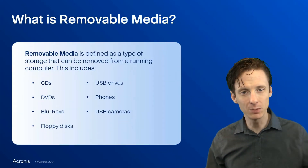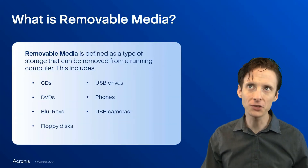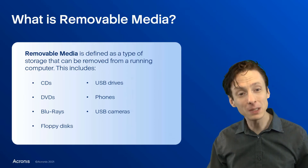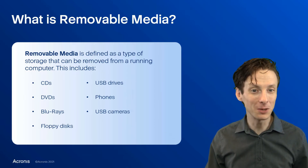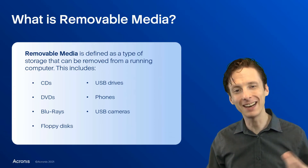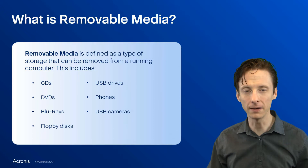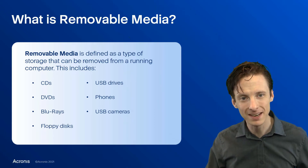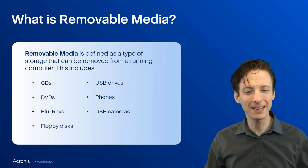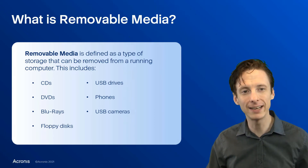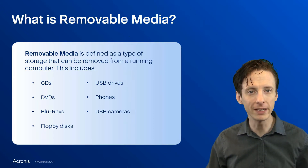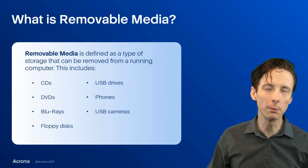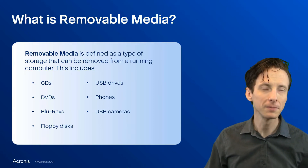CDs, DVDs, Blu-rays, flash drives, maybe even phones if they're connected by USB — and the list kind of goes on from there. If you're really retro, floppy disks. So anything that you can put data on, remove it, maybe put it in your pocket, would be considered removable media.